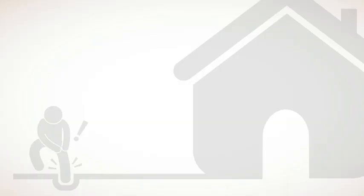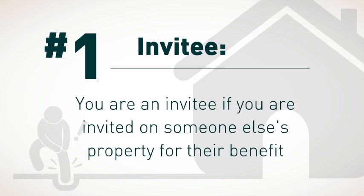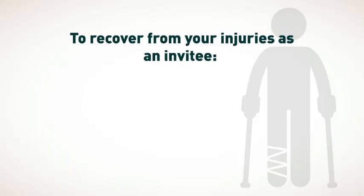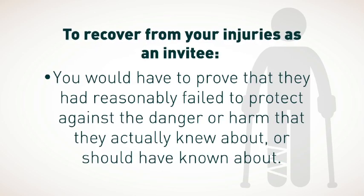The law regarding liability for dangerous conditions is that a property owner or person in control of the property is responsible in different ways. The reasons why you might be on someone else's property can be broken down into three classes. First, you could be an invitee. You're an invitee if you were invited onto someone else's property for their benefit — one example would be entering property for business reasons such as going shopping or into a restaurant. To recover for your injuries as an invitee, you would have to prove that they had reasonably failed to protect against a danger or harm that they actually knew about or should have known about.